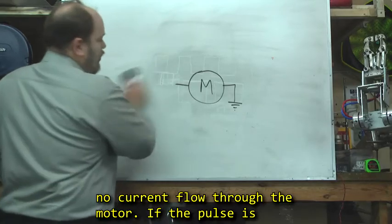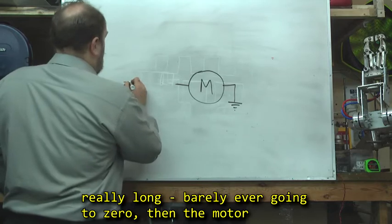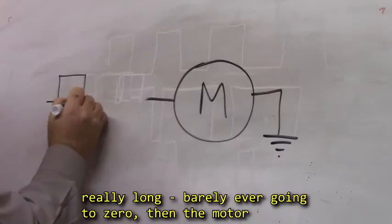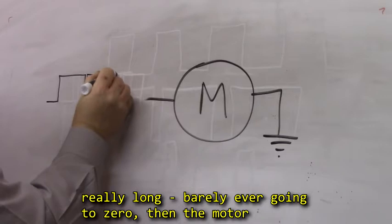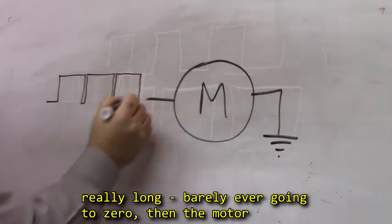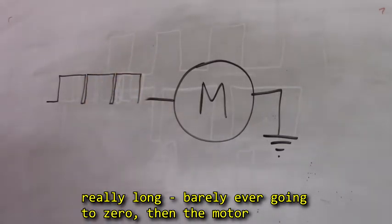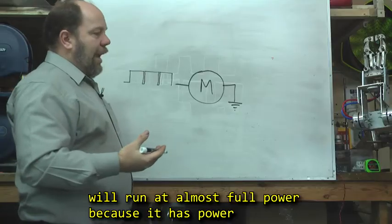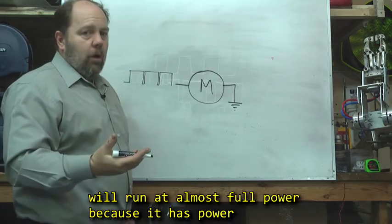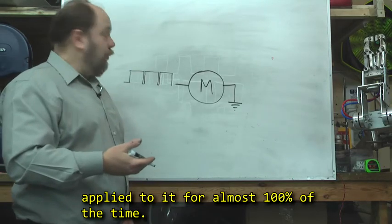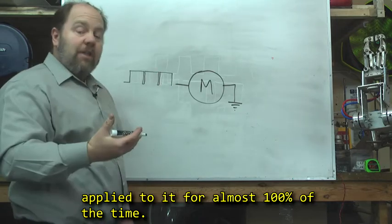If the pulse is really long, barely ever going to zero, the motor will run at almost full power because it has power applied to it for almost 100% of the time.